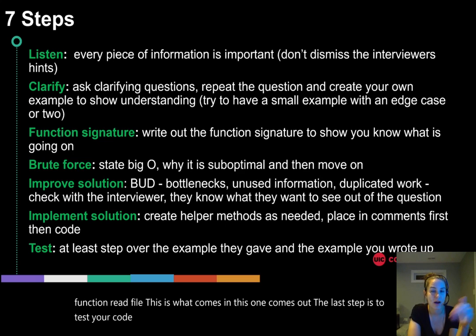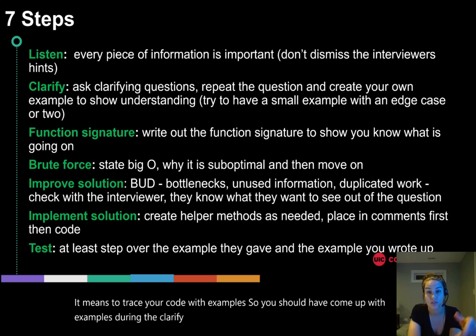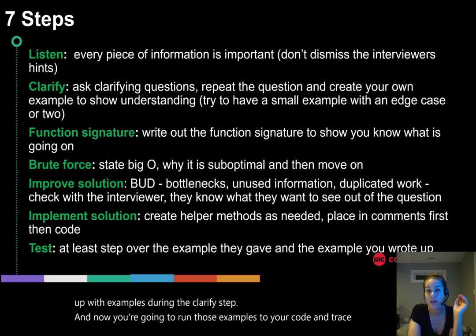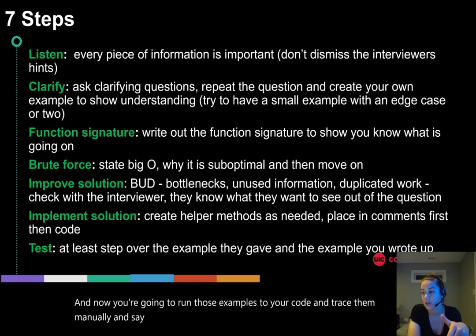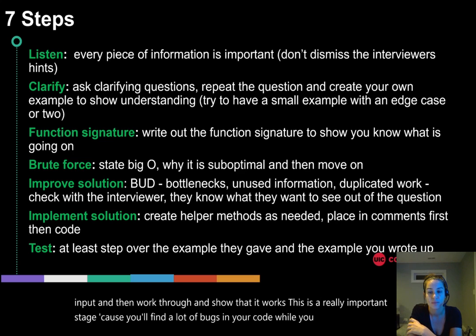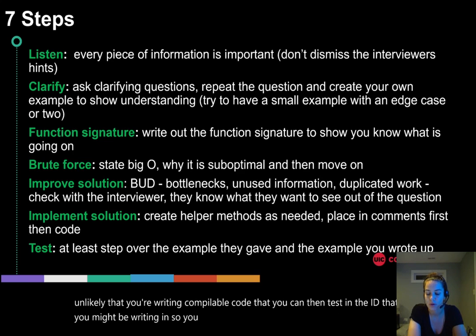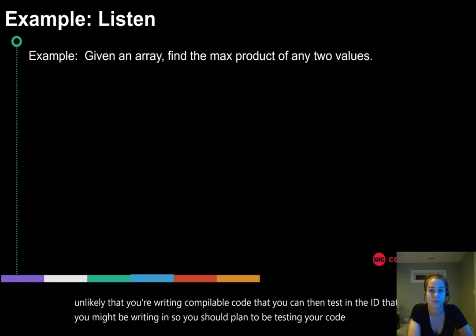The last step is to test your code. This does not mean compile and run — it means trace your code with examples. You should have come up with examples during the clarify step. Now run those examples through your code manually, tracking what each variable holds for each input. This is a really important stage because you'll find a lot of bugs, and you're unlikely to be writing fully compilable code in the interview environment.